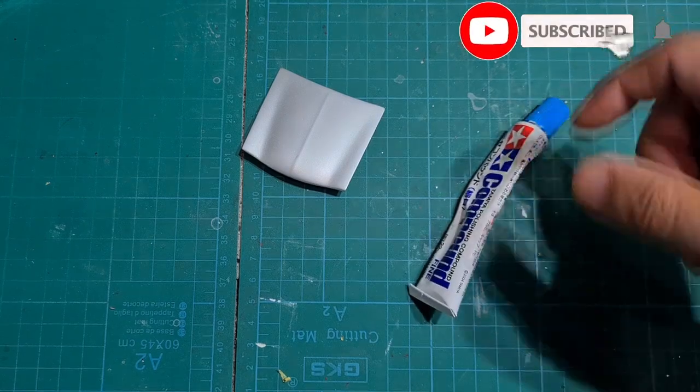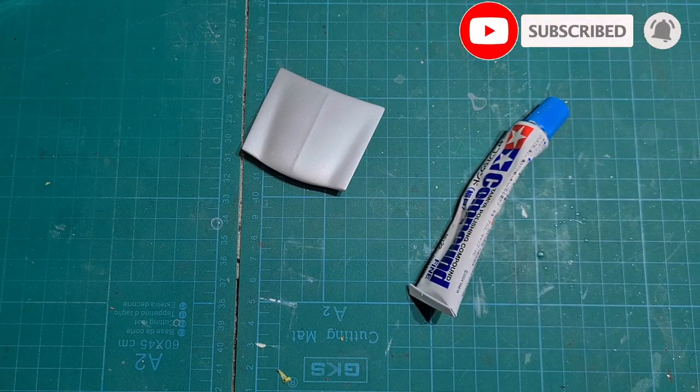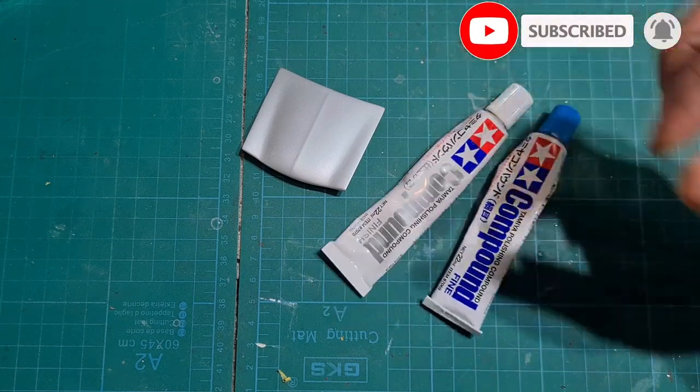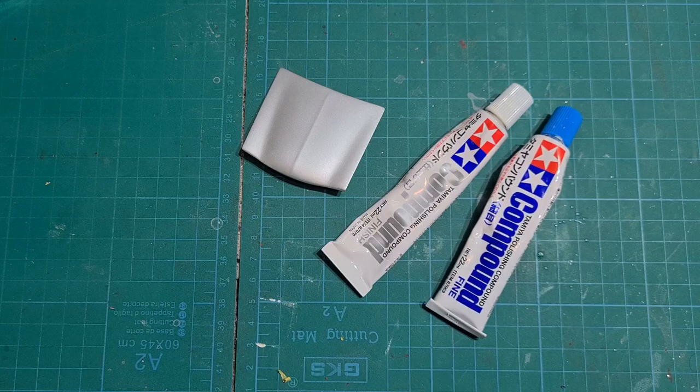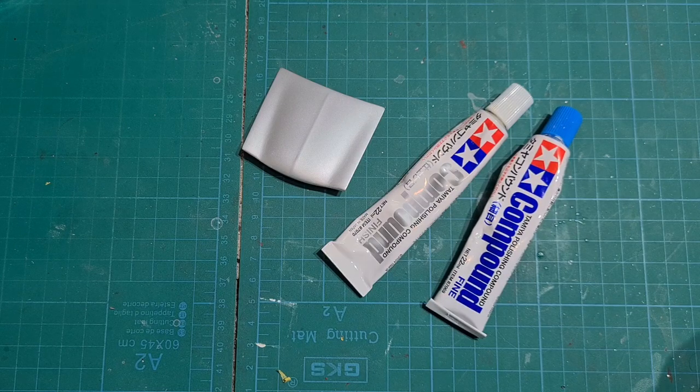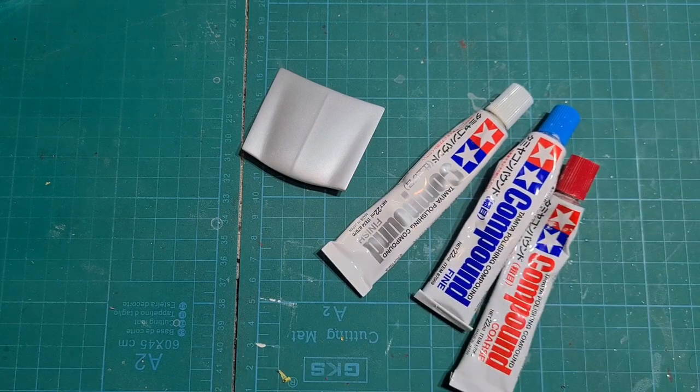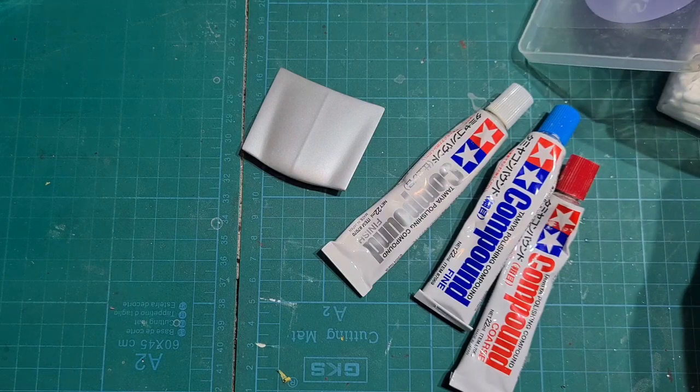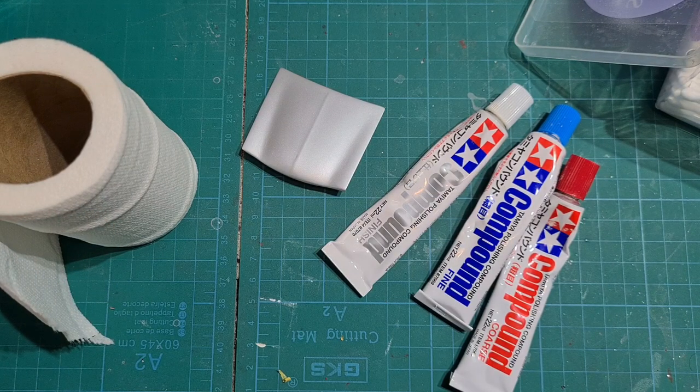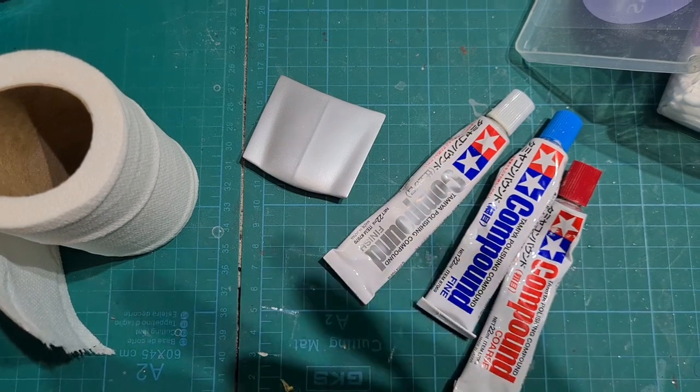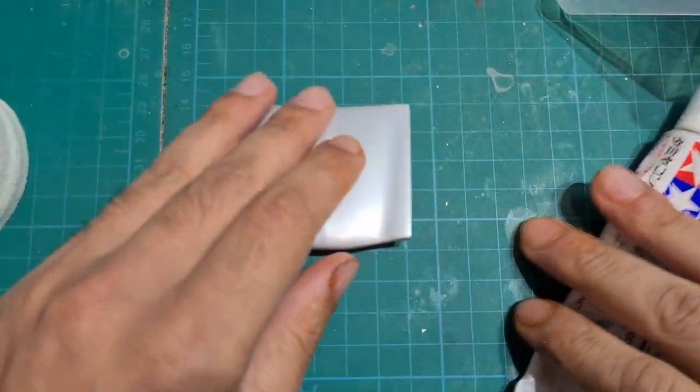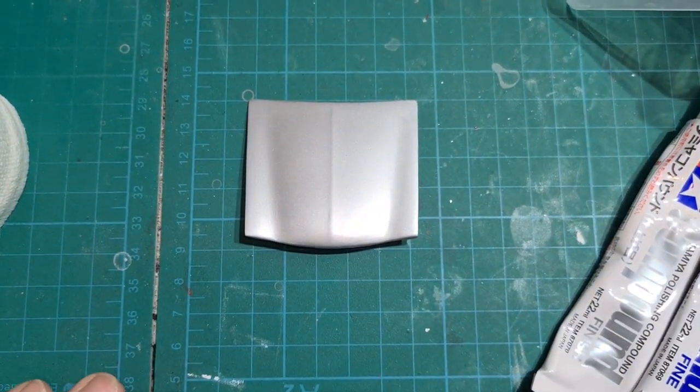In order to do this, we need Tamiya's Polishing Compounds. We need the Tamiya's Polishing Compound Coarse, which is the first one we're going to apply. Then we need Tamiya's Polishing Compound Fine, which is the blue one, which is the second one we will apply. Then we need Tamiya's Polishing Compound Finish, which is the silver one. That will be the last one we will apply.